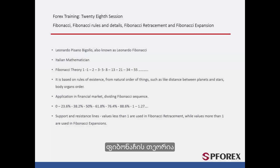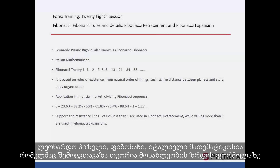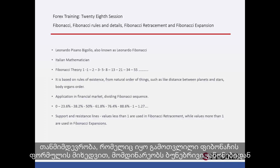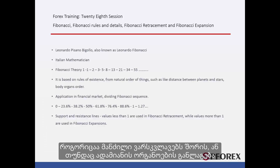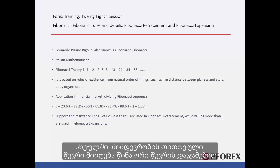Fibonacci Theory: Leonardo Pisano Bigolo, also known as Leonardo Fibonacci, an Italian mathematician, proposed his theory on population growth rate formula. The sequence of numbers calculated by the Fibonacci formula is derived from all natural orders, such as distances between stars or even the position of human organs. The numbers are calculated by adding the last two numbers.